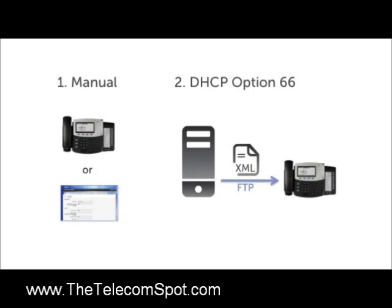There are two predominant configuration methods that work with most SIP phones. The first is to configure each phone manually, done from the phone's physical interface or using a web-based GUI served from the phone. The second method is to use DHCP option 66. When the phone requests an IP address from the DHCP server, the server sends instructions on how to download a pre-built configuration, typically storing it in XML files served via FTP.